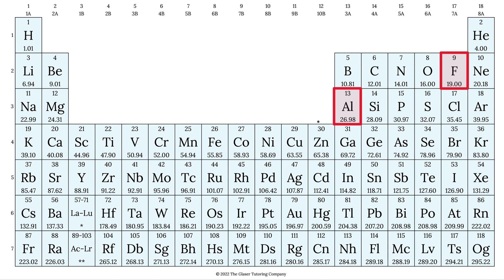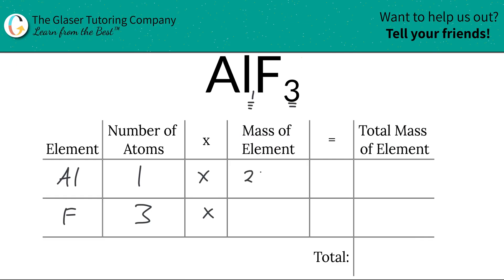So let's write in these masses. We're going to get 26.98 for aluminum, 26.98. And then we're going to plug in the 19 value for the fluorine.